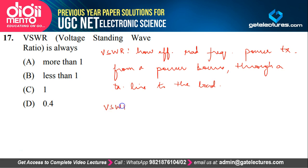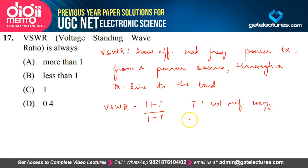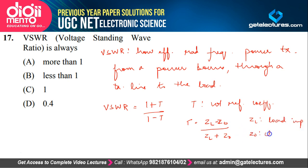We use the formula VSWR = (1 + γ) / (1 − γ), where γ is the voltage reflection coefficient, calculated as γ = (ZL − Z0) / (ZL + Z0). Here ZL is the load impedance and Z0 is the characteristic impedance of the transmission line. VSWR is basically the ratio of maximum voltage to minimum voltage — Vmax / Vmin.